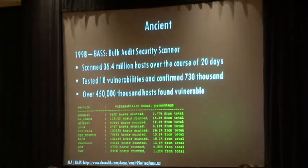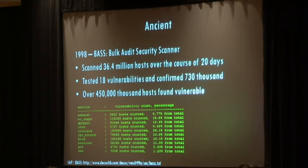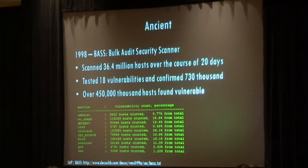Where I want to go is asking: how do we actually find data and get granular details about services on these systems? There are great services like Shodan and other research projects. One of the oldest is the BASS project from 1998 — they scanned 36.4 million sites and found over 450,000 exploitable hosts using just 18 exploits. That ratio hasn't really changed much over the years — we're still just as screwed as we always were.